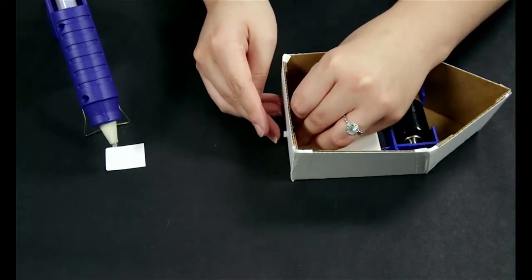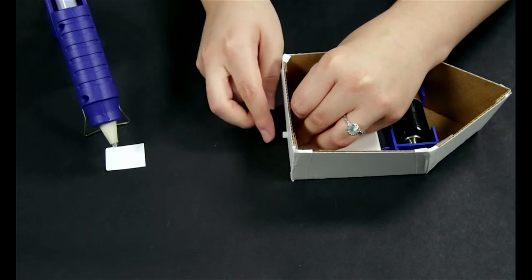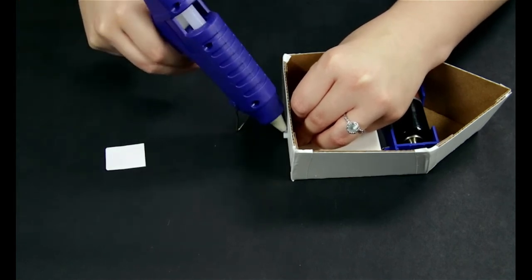The straw will line up with the angle of the ramp in the back of the boat. Use hot glue to seal the seam around the straw.